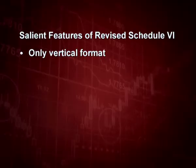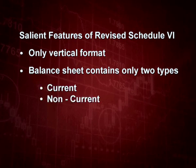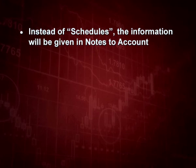What are the salient features of the revised Schedule 6? First, it is only in a vertical format — previously the horizontal format was very popular, but now only the vertical format is allowed. The balance sheet now contains only two types of liabilities: current liabilities and non-current liabilities. Similarly, the asset side contains current assets and non-current assets. The statement of profit and loss classifies expenses on the basis of their nature, and instead of schedules, information will be given in the notes to the accounts.